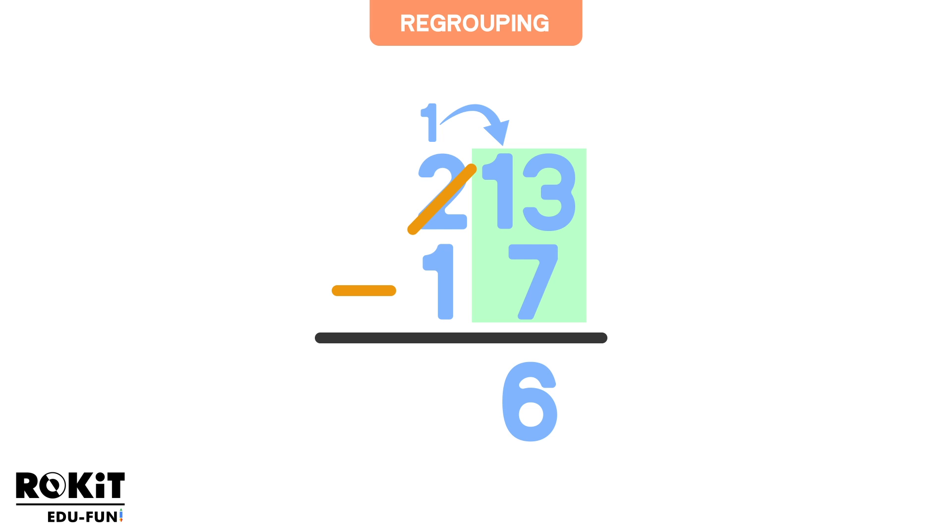Now we have to subtract the tens column. So what is 1 minus 1? Right, 0. So there we have the answer. The answer is 6.